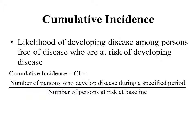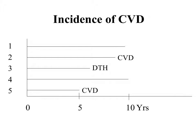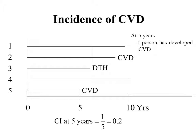Here is the formula for cumulative incidence, abbreviated CI: the number of persons who develop the disease during a specified period divided by the total number of persons at risk at baseline. Looking at the same graph at the end of five years, the cumulative incidence is one person who developed cardiovascular disease divided by five people at risk at baseline, giving one-fifth, or 0.2 — so 20% of participants developed cardiovascular disease after five years.